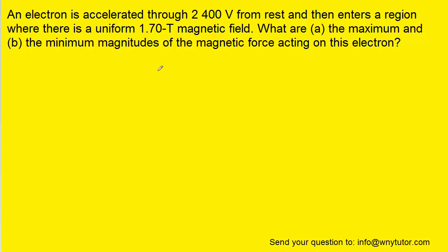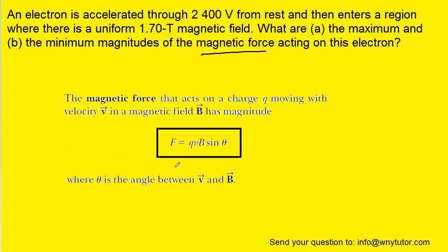Since the question is asking for the maximum and minimum magnitudes of the magnetic force acting on an electron, we would want to consider the equation that we can use to calculate magnetic forces that exist on charged particles. From this chapter we know that the magnetic force obeys this equation here, in which q is the charge, v is the velocity, B is the strength of the magnetic field, and theta is the angle between the velocity and the magnetic field vectors.